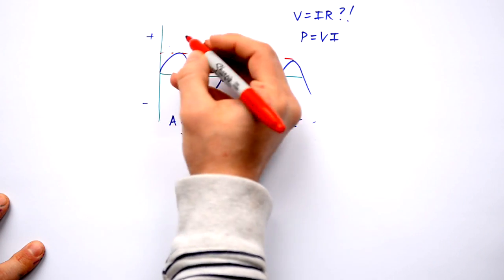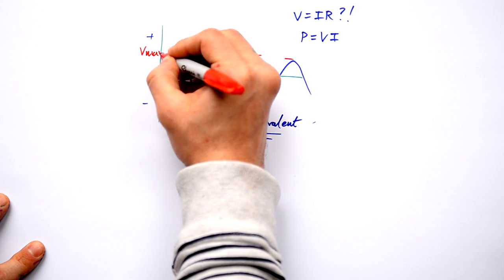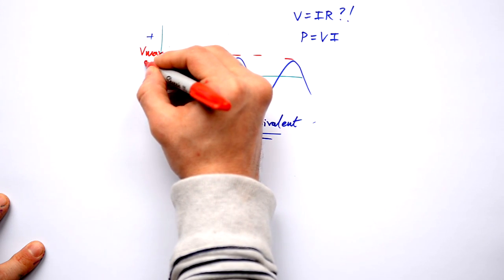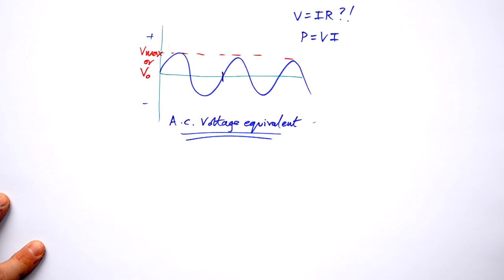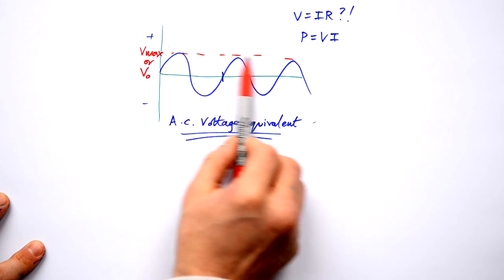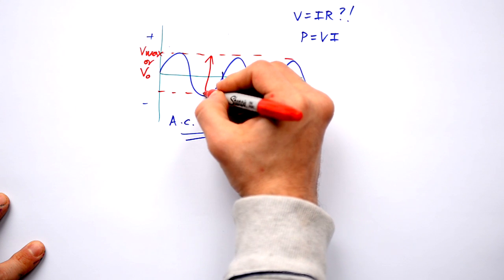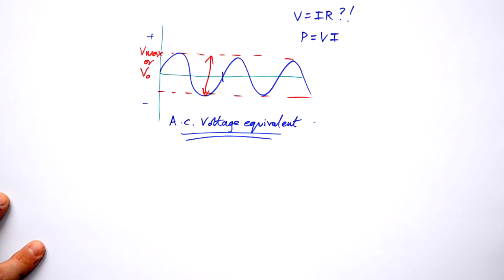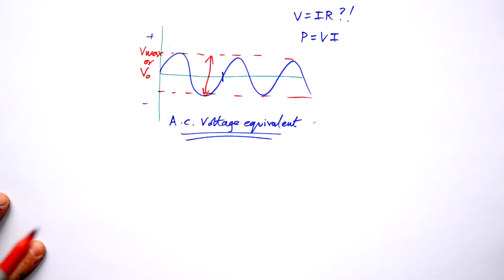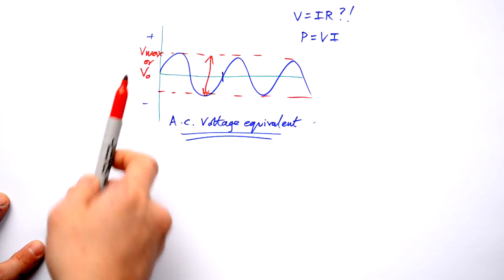Here we have our V max, also known as V zero. In other words, that's the peak voltage that we have there. By the way, if you're asked for peak to peak, then that's what you're going for. You go for twice the top voltage, but we're just going to be dealing with V zero for now.